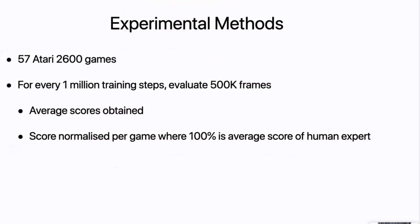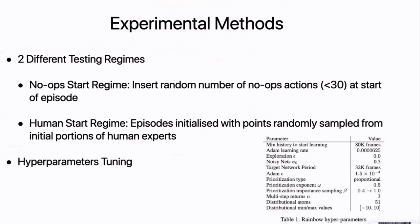In the experiment section, the authors used 57 Atari 2600 games. Every million training steps they evaluate 500,000 frames and get the average scores. The average scores are normalized — they get human experts to play the game and take note of the human expert's high score, which becomes the 100th percentile normalization value.